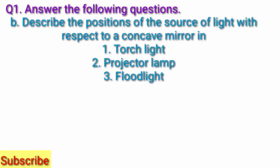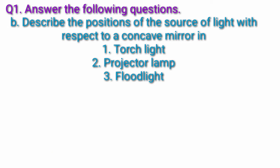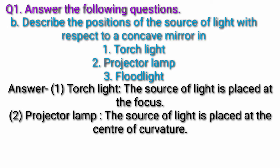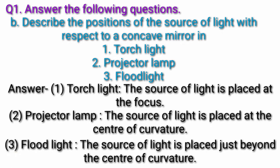Question B: Describe the position of the source of light with respect to a concave mirror for: 1. Torch light, 2. Projector lamp, 3. Flood light. Answer: 1. Torch light — the source of light is placed at the focus. 2. Projector lamp — the source of light is placed at the center of curvature. 3. Flood light — the source of light is placed just beyond the center of curvature.